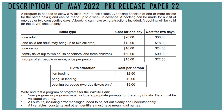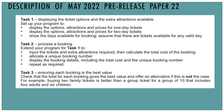In the last video we looked at the description of the pre-release material. Here is the information that we need, and we stored that information in one-dimensional arrays. Quick recap of task 1. In this video we're going to again look at displaying the options, attractions, and prices for one-day tickets and for two-day tickets. And we're going to concentrate on task 2.